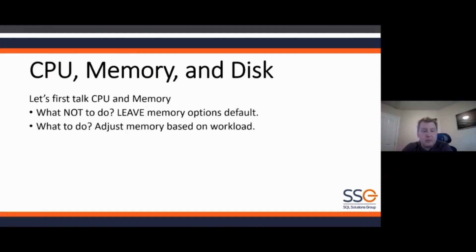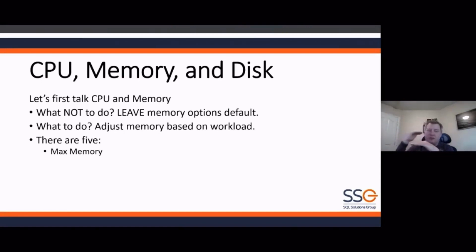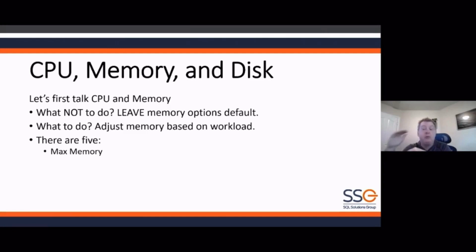What you want to do is adjust your memory based on workloads. There are five settings I really want to focus on. The first one is max memory. People will either not configure max memory or configure it incorrectly. Max memory sets the upper bound for memory used in the buffer pool — it guarantees the OS and other applications won't lose memory. So if your machine has 128 gig of RAM and you tell SQL it gets 100 gig, SQL will only use that 100 gig.